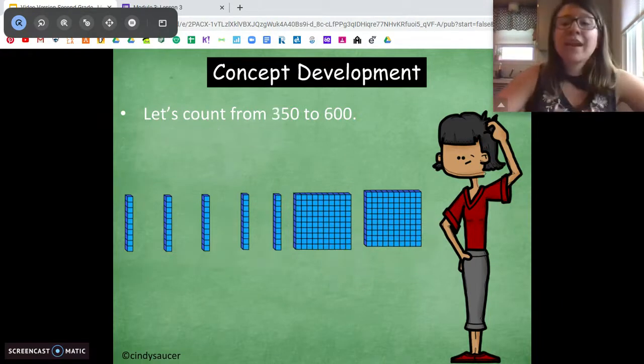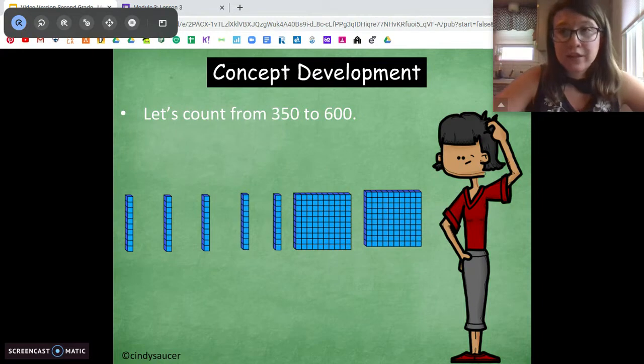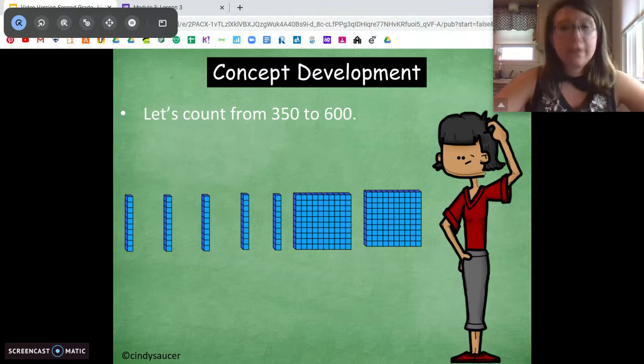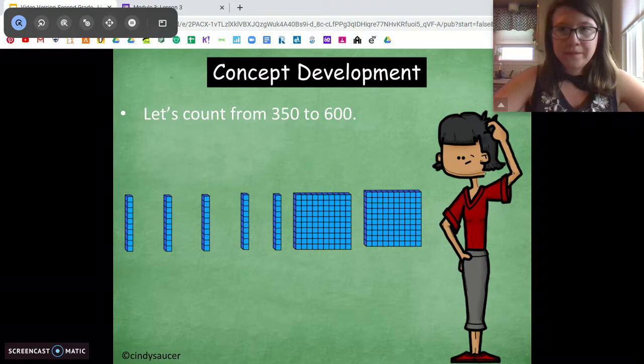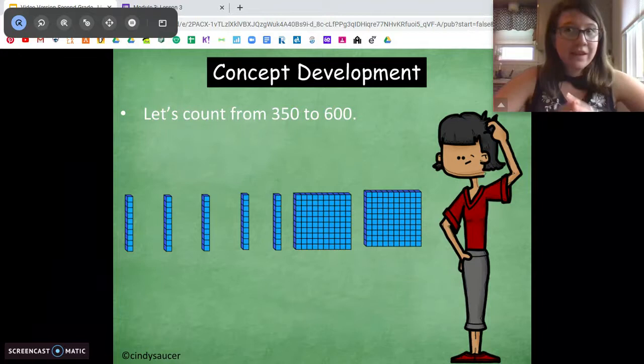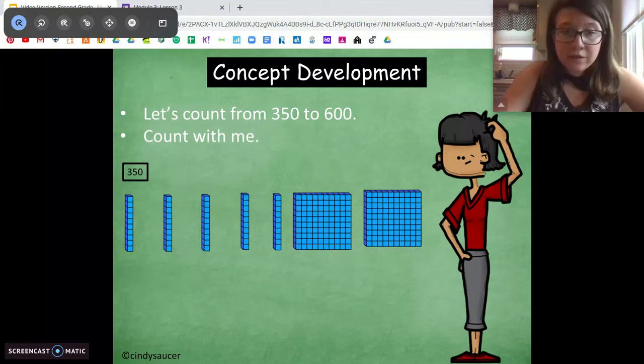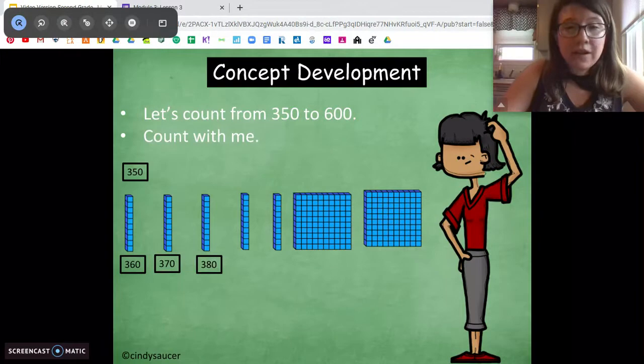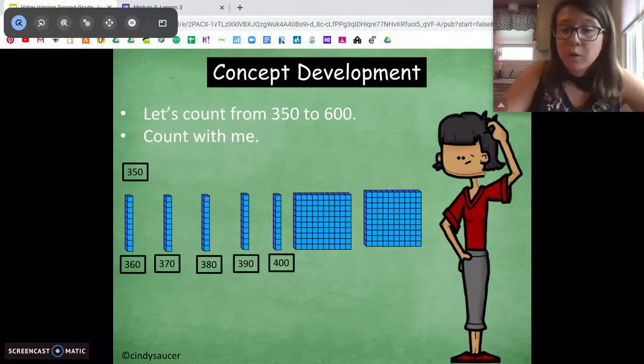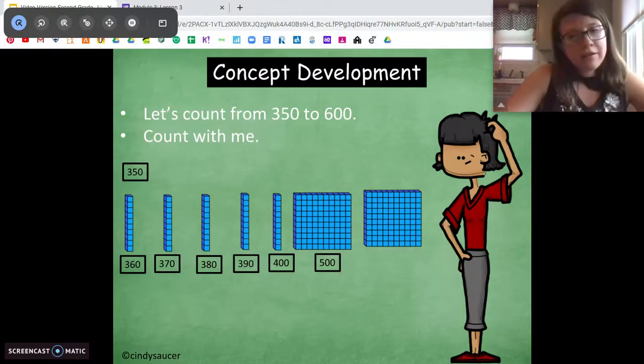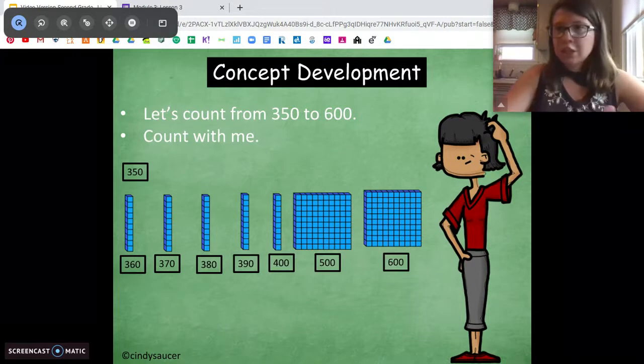All right, let's try another one. Count from 350 to 600. Pause and talk to someone at home about how we're going to do this the most efficient way, the easiest, fastest way. 350 to 600. Yeah, I agree. Let's get 350 to the next 100 by counting by tens. So we're at 350, so let's count by tens. 360, 370, 380, 390, 400. Now, we just count by hundreds. 500, 600. Done. Awesome.